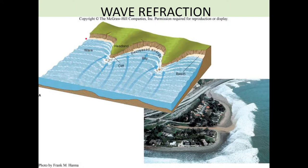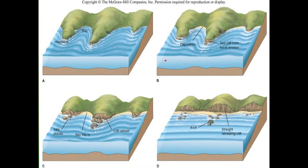This erosion at the points and deposition in the bays is what will straighten a coastline. You can see the evolution of what you'll end up getting if you have a coastline with a lot of points or headlands. Over time, you'll get deposition of beaches at the back and sea cliffs along these points. Fast forward a few thousand years, your points have now turned into sea stacks. You'll see this a lot on the west coast. Coastlines like along England show these huge sea cliffs, occasionally with arches. But for the most part, you've straightened the coastline.